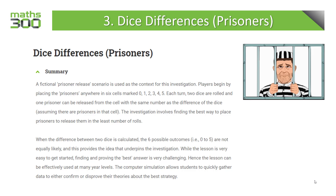Players begin by placing the prisoners anywhere in six cells, marked 0, 1, 2, 3, 4, or 5. Each turn, two dice are rolled and one prisoner can be released from the cell which has the same number as the difference between the numbers showing on the top face of the dice.